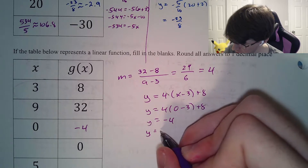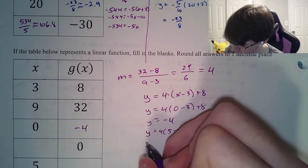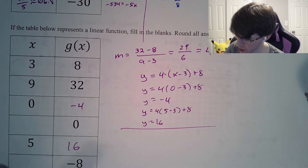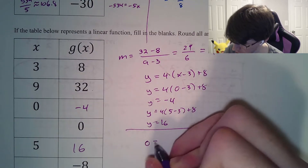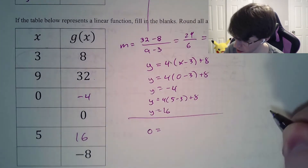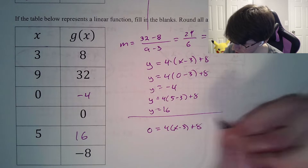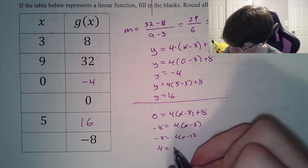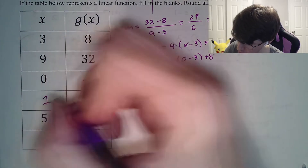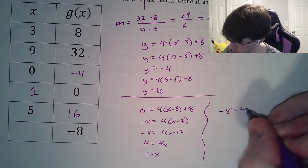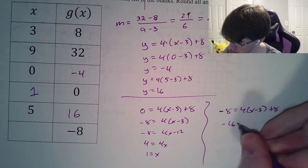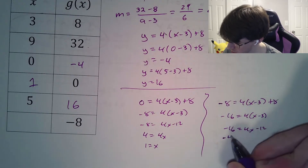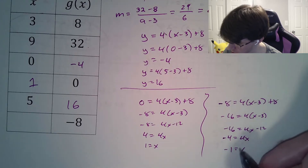Same thing for plugging in 5: 4 times 5 minus 3, plus 8 — that looks like 16. Then we need to figure out the x values. Setting y equal to 0: 4 times x minus 3, plus 8. Subtract 8 on both sides, distribute the 4, add 12, divide by 4. For y equals negative 8: negative 8 equals 4 times x minus 3 plus 8. Subtract 8: negative 16 equals 4x minus 12. Add 12: negative 4 equals 4x. So x equals negative 1.